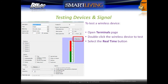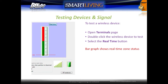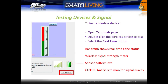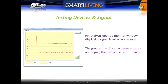To test a wireless device, open the terminals page, double click on a wireless terminal to test, and then select the real time button. The bar graph will show real time zone status as the zone is triggered. Signal strength is indicated by a wireless signal strength meter, and the sensor's battery level can also be observed. The RF analysis button will open an analysis window to monitor signal quality. The RF analysis monitor will show a signal level at the top and a noise level at the bottom — the greater the distance between the two signals means the better the signal quality.